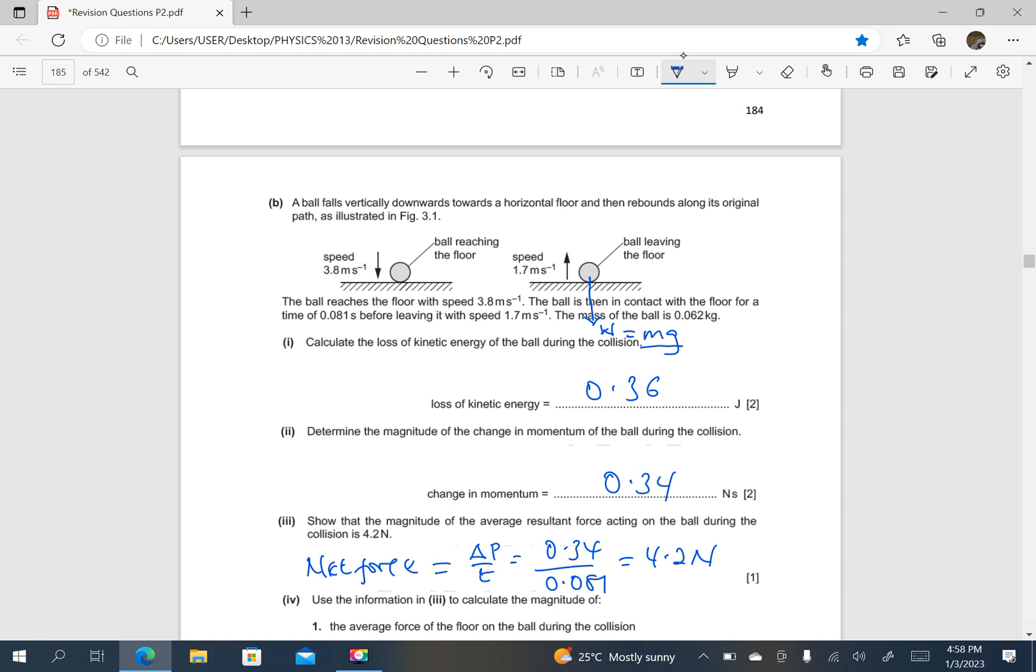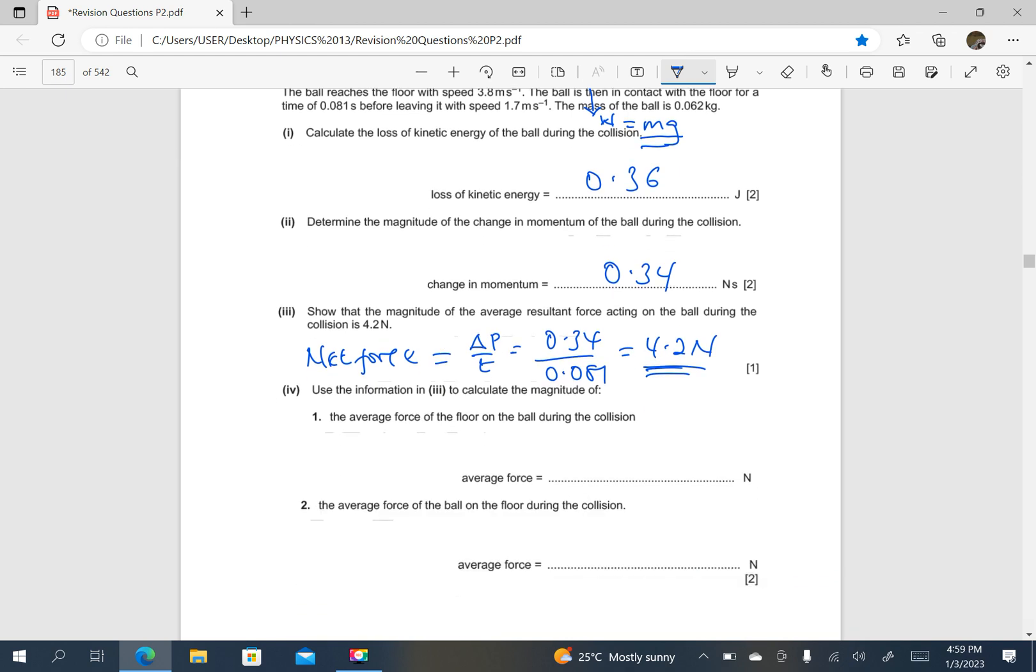The floor is exerting a force on the ball in the opposite direction. If there is a resultant force, these two forces are not equal. So this is the force by the floor. If there is a resultant, then the weight and the force by the floor are not equal.